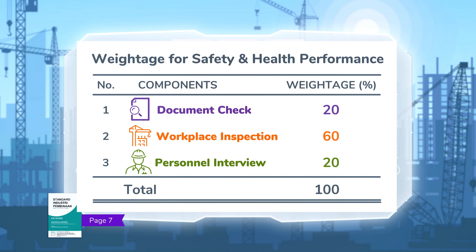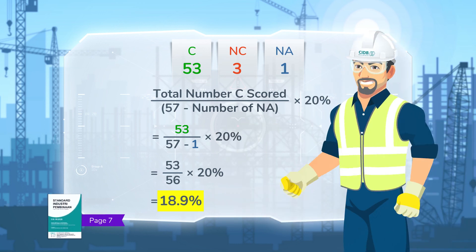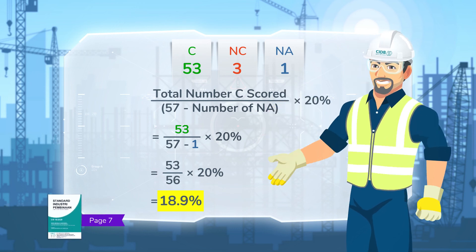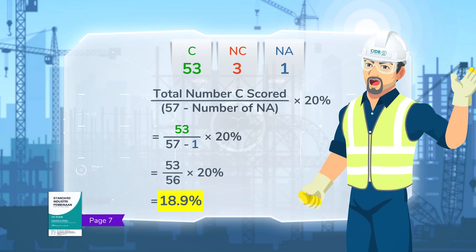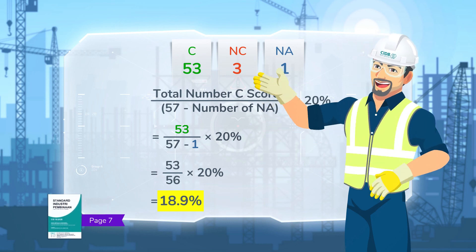Remember this table from part 1? The maximum score for document check is 20%. The score obtained was 18.9% — looks good! But note that this is not the final SHASIC score yet. You need to add this score with scores obtained from workplace inspection and personnel interview to arrive at the overall SHASIC score, which eventually determines the star ranking.